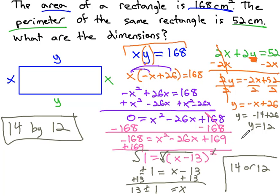But what if we had plugged the 12 in? If we had plugged the 12 in, we would have y equals negative 12 plus 26, which is equal to 14. That would be a 12 by 14 rectangle.